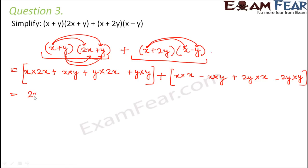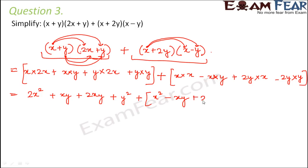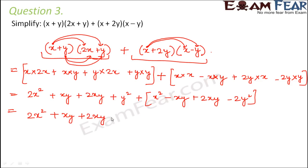So this becomes: x into 2x is 2x squared; x into y is xy; y into 2x is 2xy; y into y is y squared. For the second expression this gives: x squared minus xy plus 2xy minus 2y squared. So let us bring this all out of the bracket: 2x squared plus xy plus 2xy plus y squared plus x squared minus xy plus 2xy minus 2y squared.